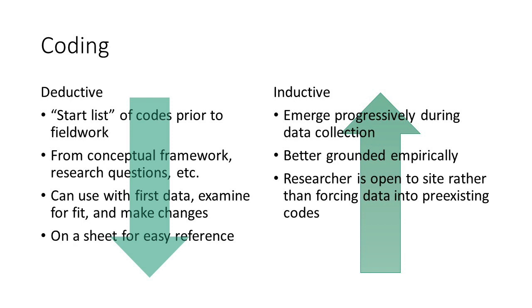There are two primary approaches to coding: deductive and inductive. In deductive coding, you work from the top down. You begin with a list of codes you expect to see prior to going into the field and collecting data. These codes are drawn from the conceptual framework, research questions, or literature review. The authors describe this as provisional coding, where you begin with a priori codes or a start list of codes. These codes can be modified, deleted, expanded, or combined as analysis progresses. With inductive coding, you work from the bottom up. The codes are drawn from the data collection and the site rather than being determined before going into the field.